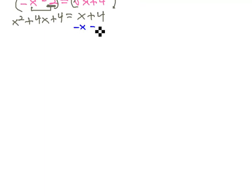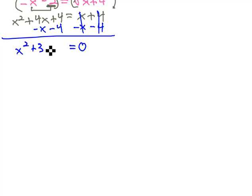Let's make it equal 0 by subtracting x and subtracting 4. Gives us 0 on the right, x squared plus 3x and the 4's subtract out as well.